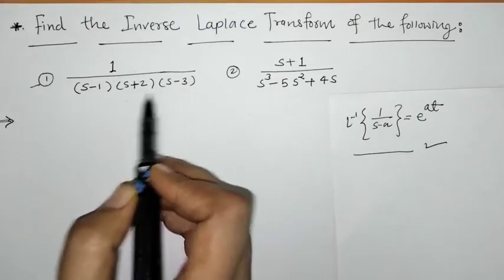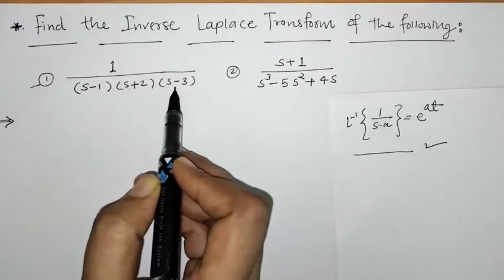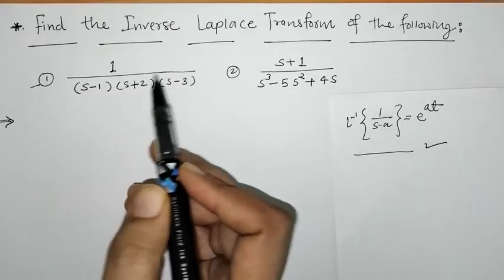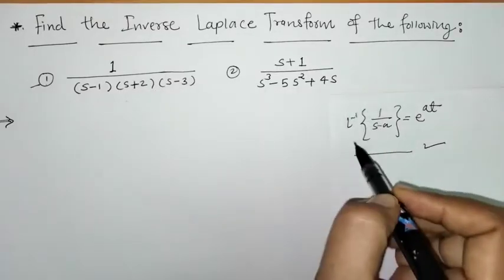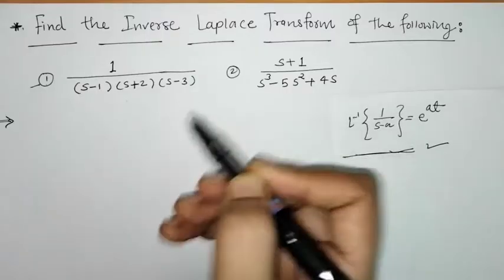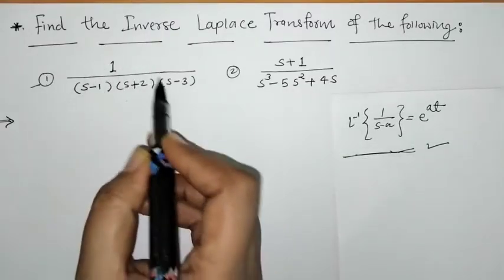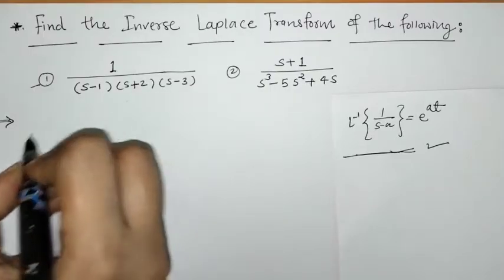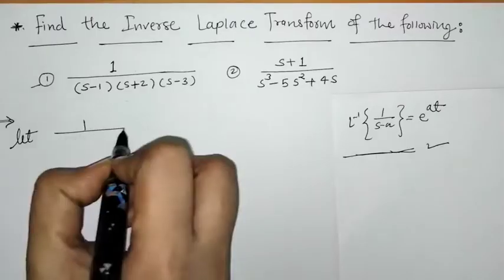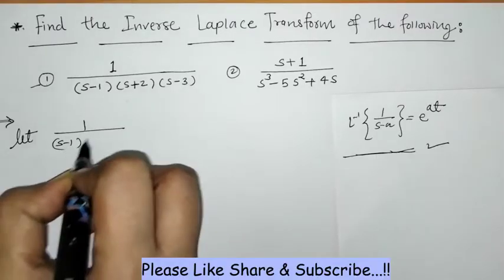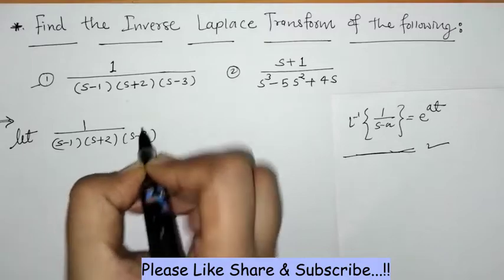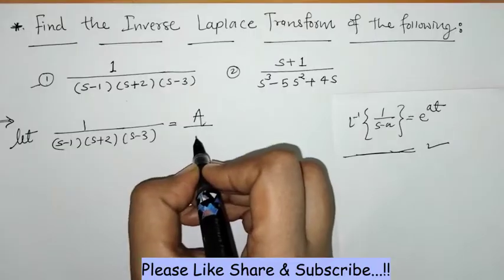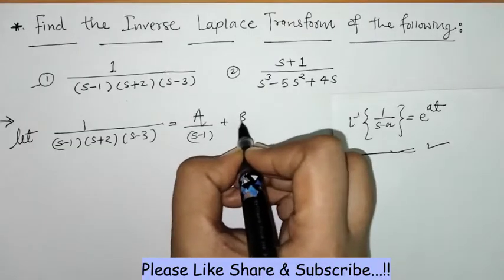Here we can check that all these functions are in multiplication. That means we should write this function in addition or subtraction so that by applying the linearity property and this formula we can find its inverse. So we have to write this function using the partial fraction method. This gives A upon (s minus 1) plus B upon (s plus 2) and C upon (s minus 3).